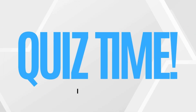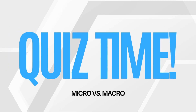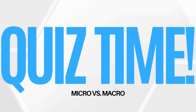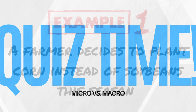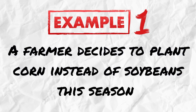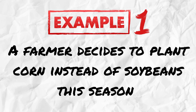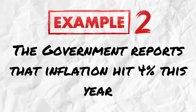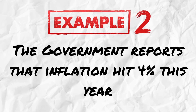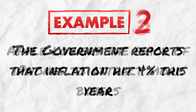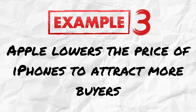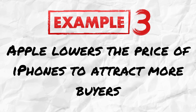So if you've been paying attention, here's a really quick quiz. I'm going to give you a scenario and you're going to tell me — is it micro or macro? Scenario one: a farmer decides to plant corn instead of soybeans this season. Scenario two: the government reports that inflation hit 4% this year. Scenario three: Apple lowers the price of iPhones to attract more buyers.